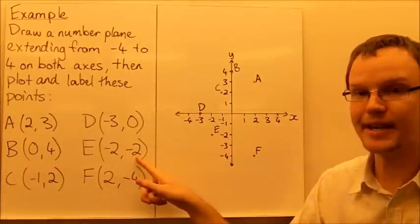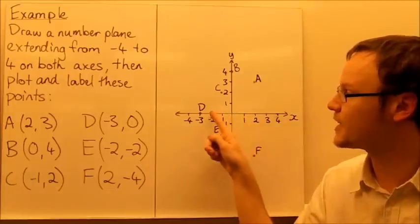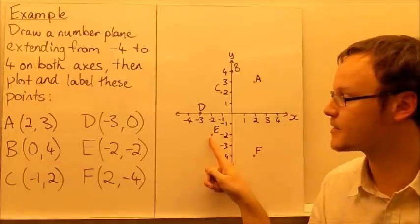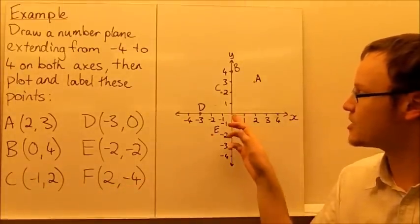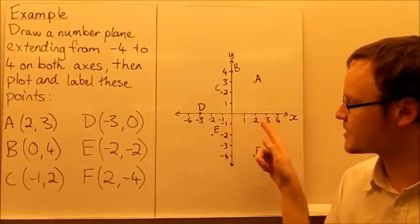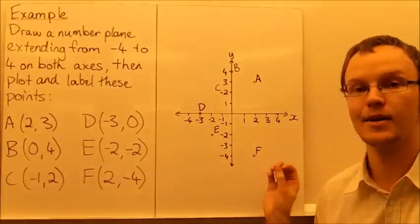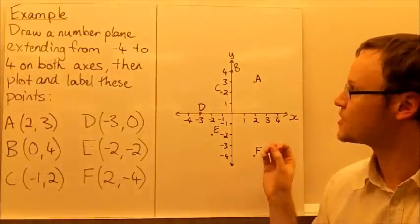E is (-2,-2), so we move negative 2 down the x-axis, and then negative 2 the y-axis. And lastly, F is positive 2 up the x-axis, and negative 4 down the y-axis.